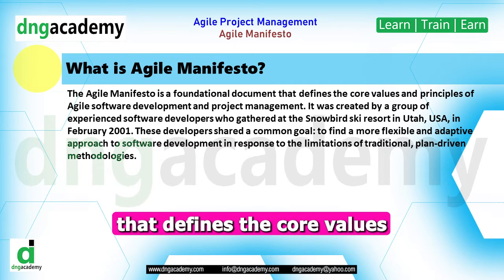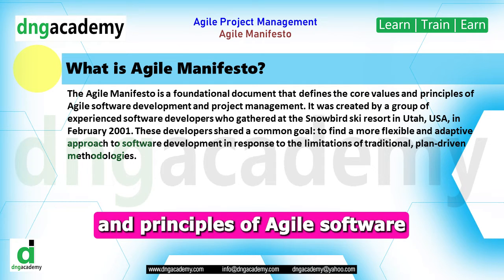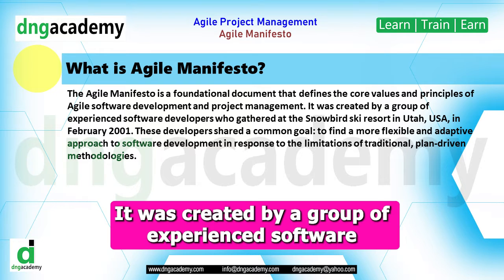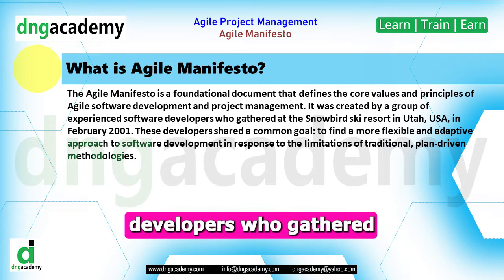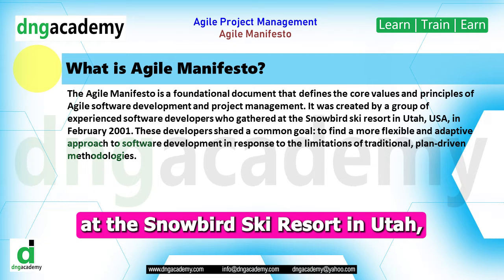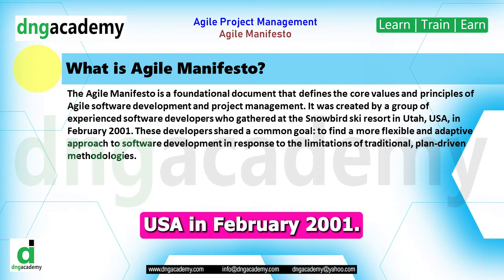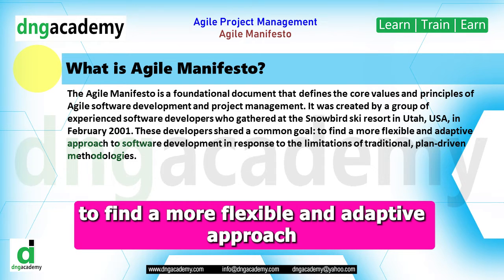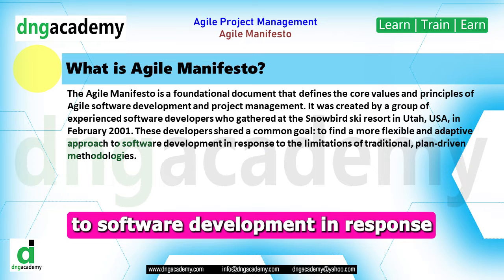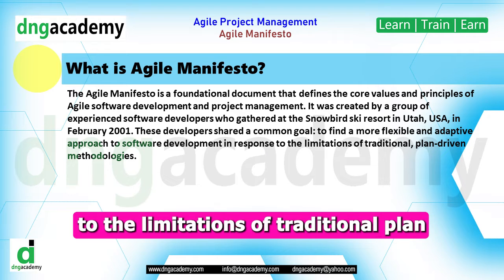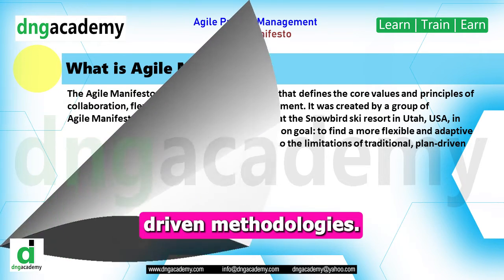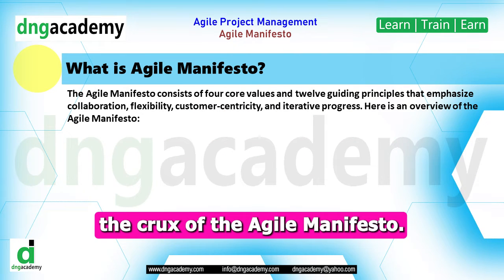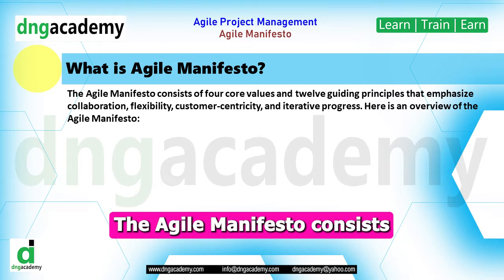Now let's move on to the Agile Manifesto. The Agile Manifesto is a foundational document that defines the core values and principles of Agile software development and project management. It was created by a group of experienced software developers who gathered at the Snowbird Ski Resort in Utah, USA, in February 2001. These developers shared a common goal: to find a more flexible and adaptive approach to software development in response to the limitations of traditional, plan-driven methodologies.